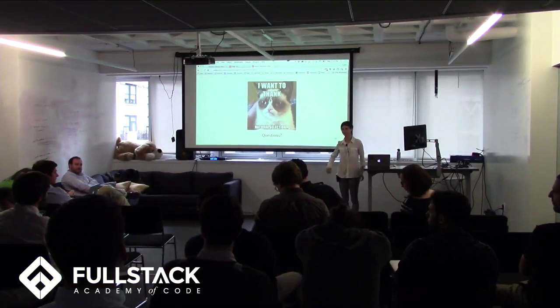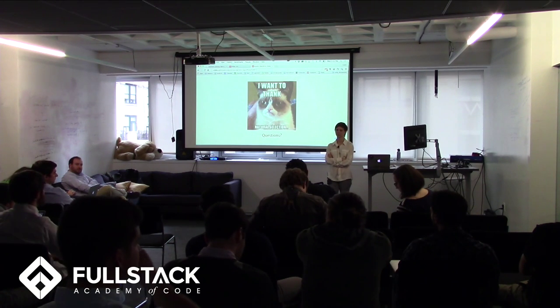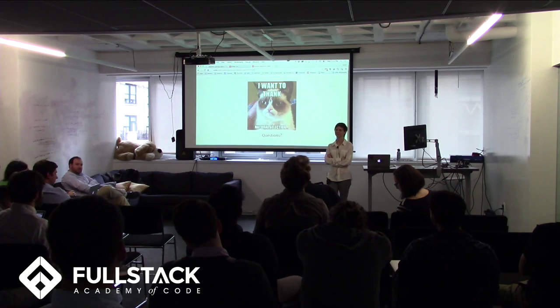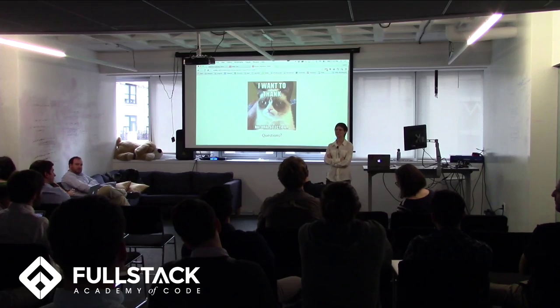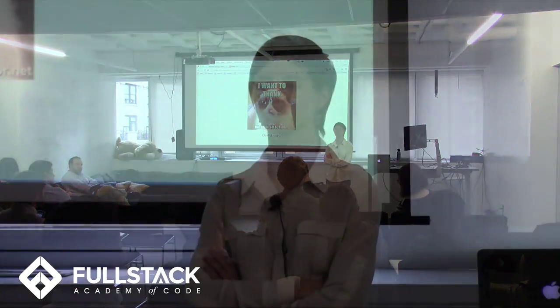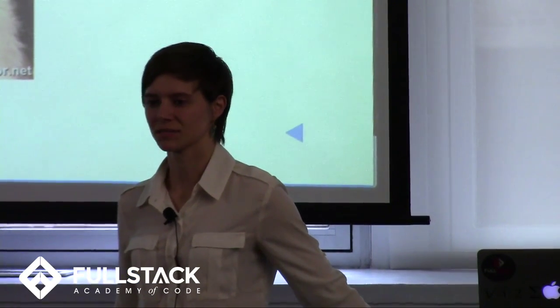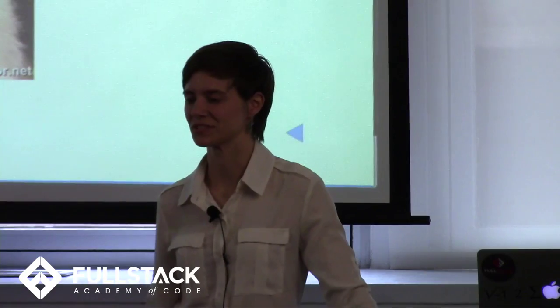A question from the audience: where did genetic algorithms come from — did it come from biologists trying out evolutionary ideas in computer science? The speaker responds that it was likely computer scientists who noticed the similarity and were interested in both fields. There are a lot of mathematical algorithms that can be applied to biology and vice versa, like game theory. She admits she doesn't know the exact answer, but it would be an interesting thing to look into.